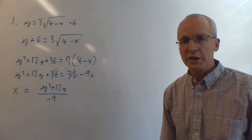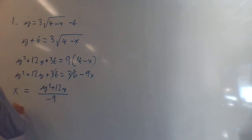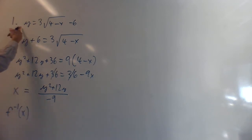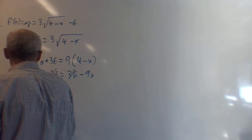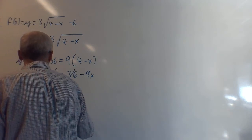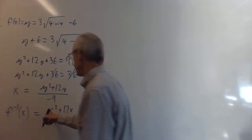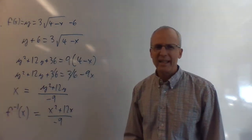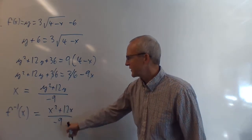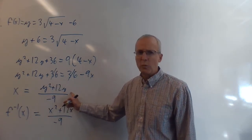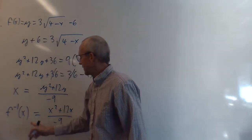That is our inverse function. It's nice to write it as a function of x: f⁻¹(x) = (x² + 12x) / (-9), which you can also write as -(x² + 12x) / 9. You don't have to switch x and y — you could leave it as a function of y — but writing both f(x) and f⁻¹(x) is cleaner.